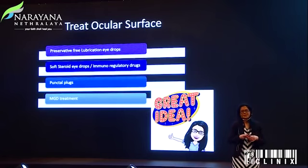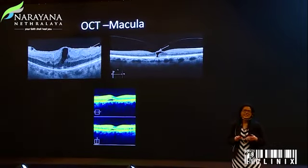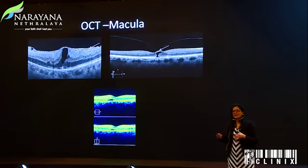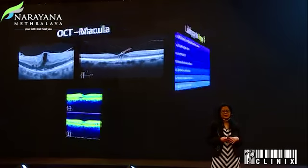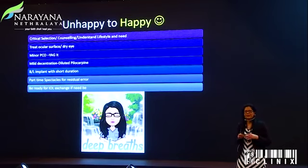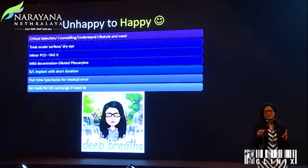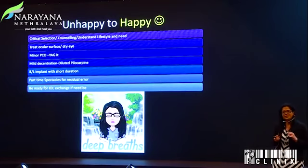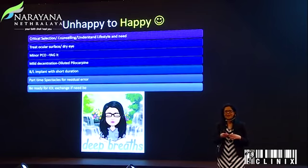I cannot emphasize enough: the ocular surface needs to be looked into in detail for any multifocal patient and treated. Last but not the least, look at the OCT macula. There may be a slight membrane or cyst that could be the reason for an unhappy patient despite a perfect multifocal. To summarize: it has to be a critical selection. For PCO, we don't wait long in multifocal — even the slightest wrinkle in the posterior capsule can give aberrations, contrast issues, halos. You would YAG the patient earlier.